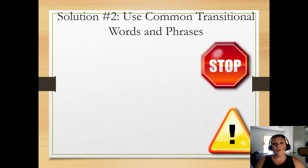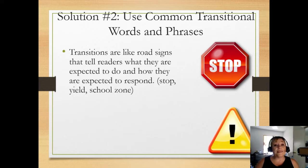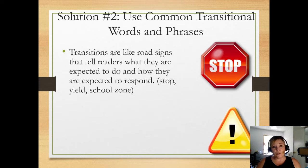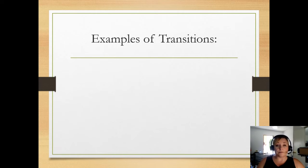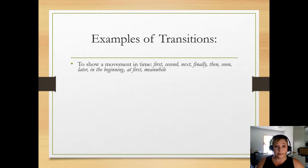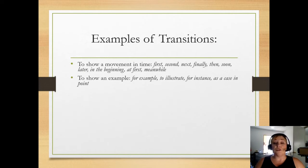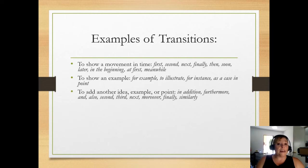Solution number two: use common transitional words and phrases. Transitions are like road signs — they tell readers what they're expected to do and how to respond. For second language students this can be difficult, but the more you can learn to use these in your writing, the better. Here are some examples: things like first, second, next, finally — those show movement. To show example: for example, to illustrate, for instance. To add another idea: in addition, furthermore.